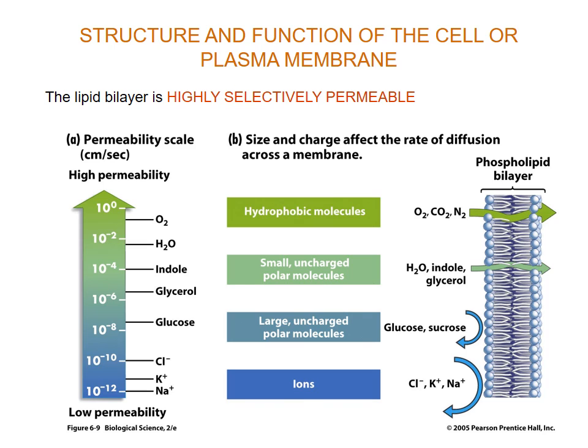On the right-hand side, you can see that hydrophobic molecules like oxygen, carbon dioxide and nitrogen will move across the membrane quite easily. It's still possible for small uncharged polar molecules like water, glycerol and indole to move across the cell membrane. But large uncharged polar molecules or ions like chlorine, potassium and sodium are prevented from crossing the membrane. Some of those ions are very important for cellular function, so we need to figure out how they get across — something we'll talk about in later lectures.